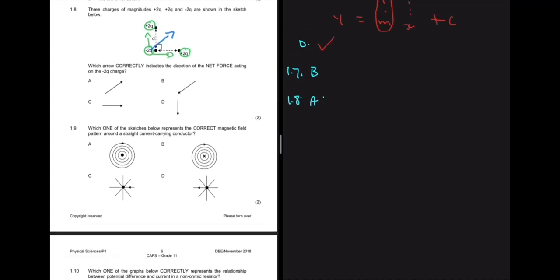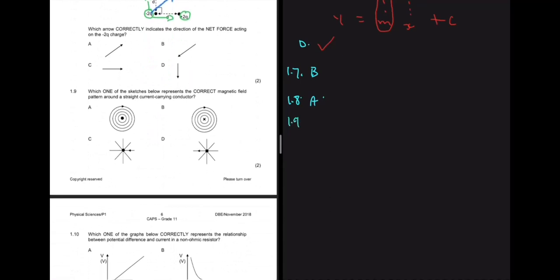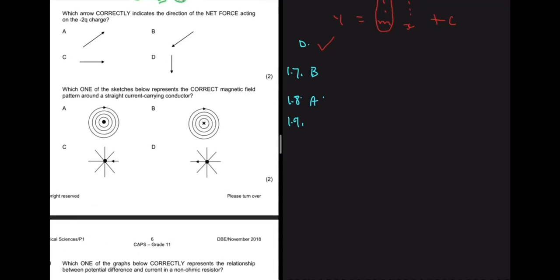Question 1.9 asks which sketch represents the correct magnetic field pattern around a straight current-carrying conductor. Options C and D are not correct. Using the right-hand rule, the answer for 1.9 is B. Due to the video format, a demonstration isn't possible, but a link to a resource will be provided in the description.